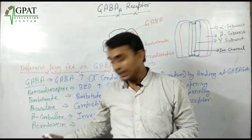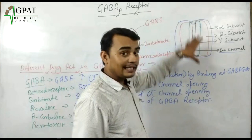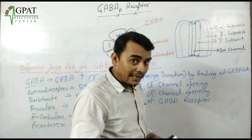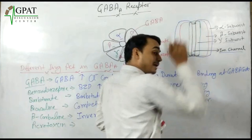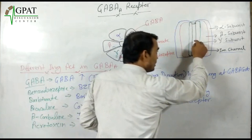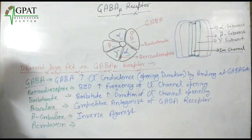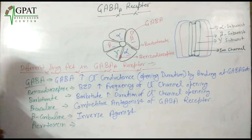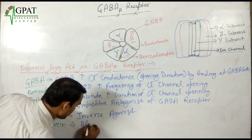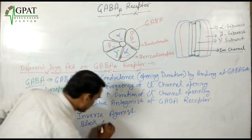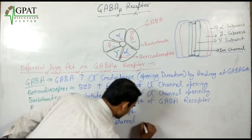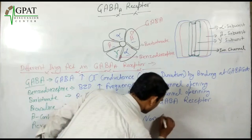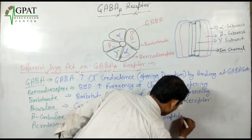But Picrotoxin is a drug which directly inhibits or closes the channel by acting from the inside. Picrotoxin blocks the chloride ion channel non-competitively.